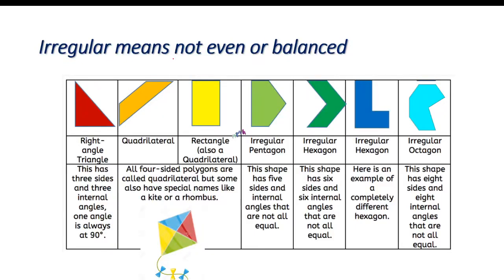Irregular means not even or balanced. Here you can see this is a right-angle triangle and it is an irregular polygon. Quadrilaterals are made up of four line segments, and both of these are quadrilaterals and both are irregular polygons. And here we have an irregular octagon.